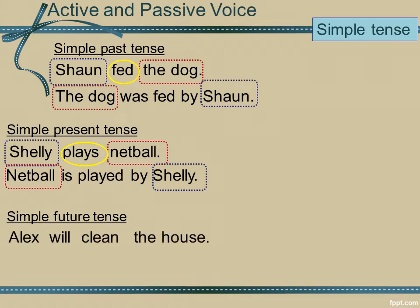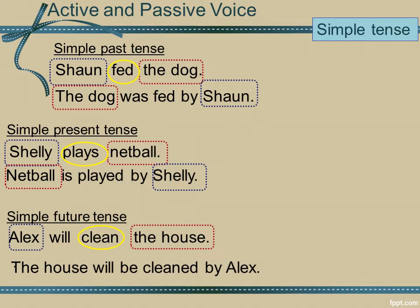Simple future tense: Alex will clean the house. Alex is the subject, clean the verb, the house is my object. I need only switch them around. The house will be cleaned by Alex — Alex now at the end of my sentence while the house is at the start.